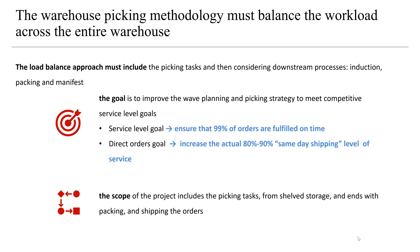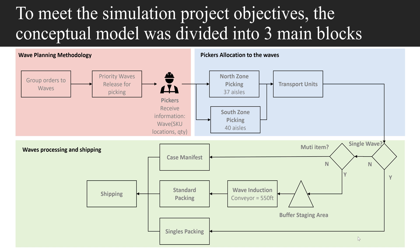The scope of the project includes the picking tasks from shelved storage and ends with packing and shipping the orders. The conceptual model has been divided into three main blocks. The first block is the wave planning methodology that proposes a three-step approach for balancing, sequencing, and grouping orders. The second and third blocks implement a control logic for pickers allocation to waves, and the waves processing and shipping. Different workflows must be implemented for case, multi-item, or single waves.